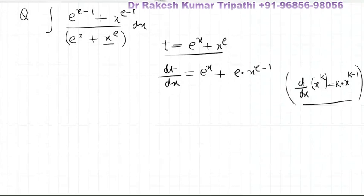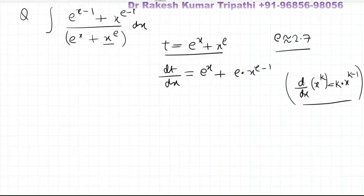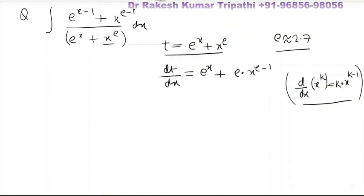Here e is a constant because its value is approximately 2.7-something. This number is known as Euler's number and its value is fixed like pi — it is an irrational number, non-terminating and non-repeating, which is why we represent it with the symbol e.